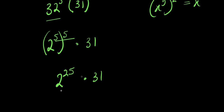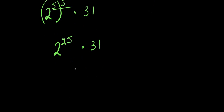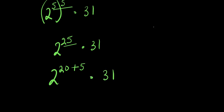Now we need to find the value of 2 to the power 25, then multiply by 31. To do this, I can express 25 as the summation of 20 and 5, so I have 2 to the power (20+5) times 31. Using the rule x to the power (n+m) equals x to the power n times x to the power m.